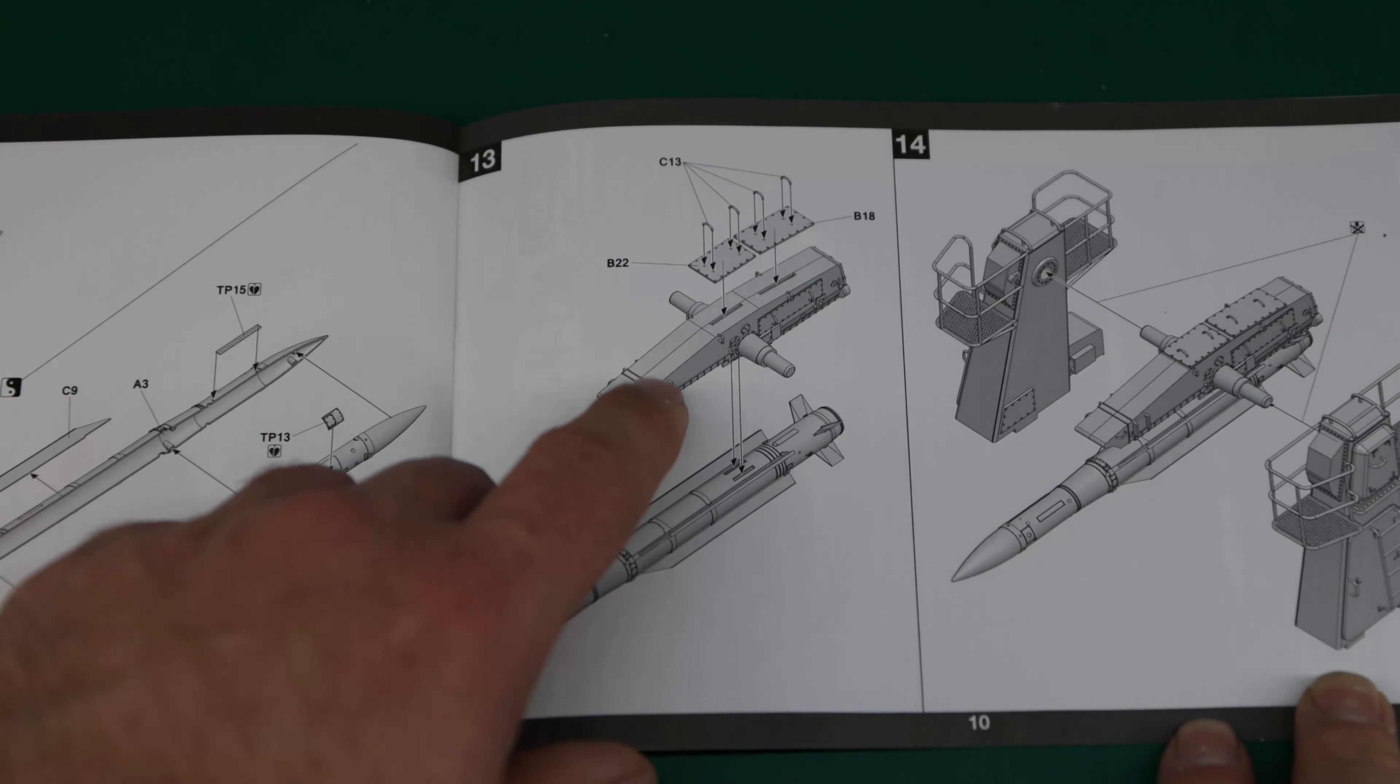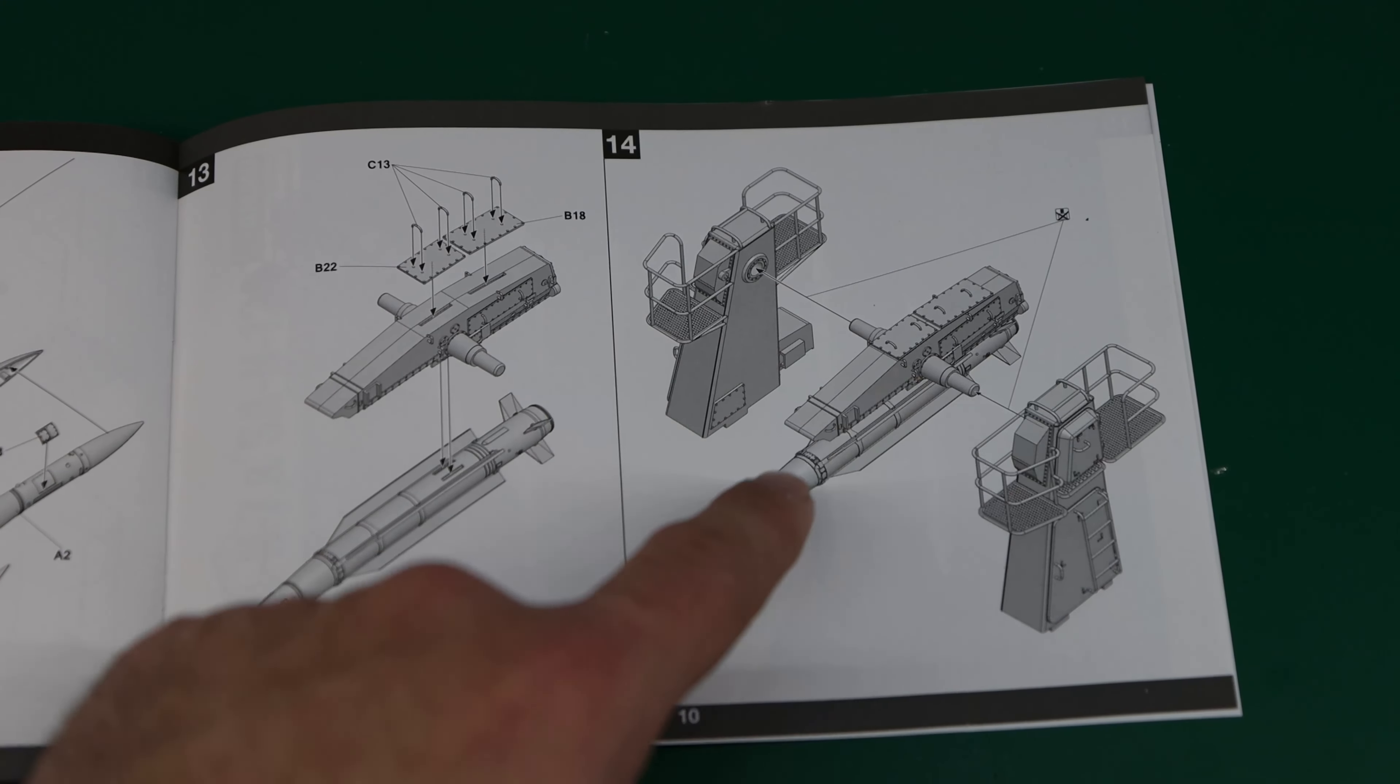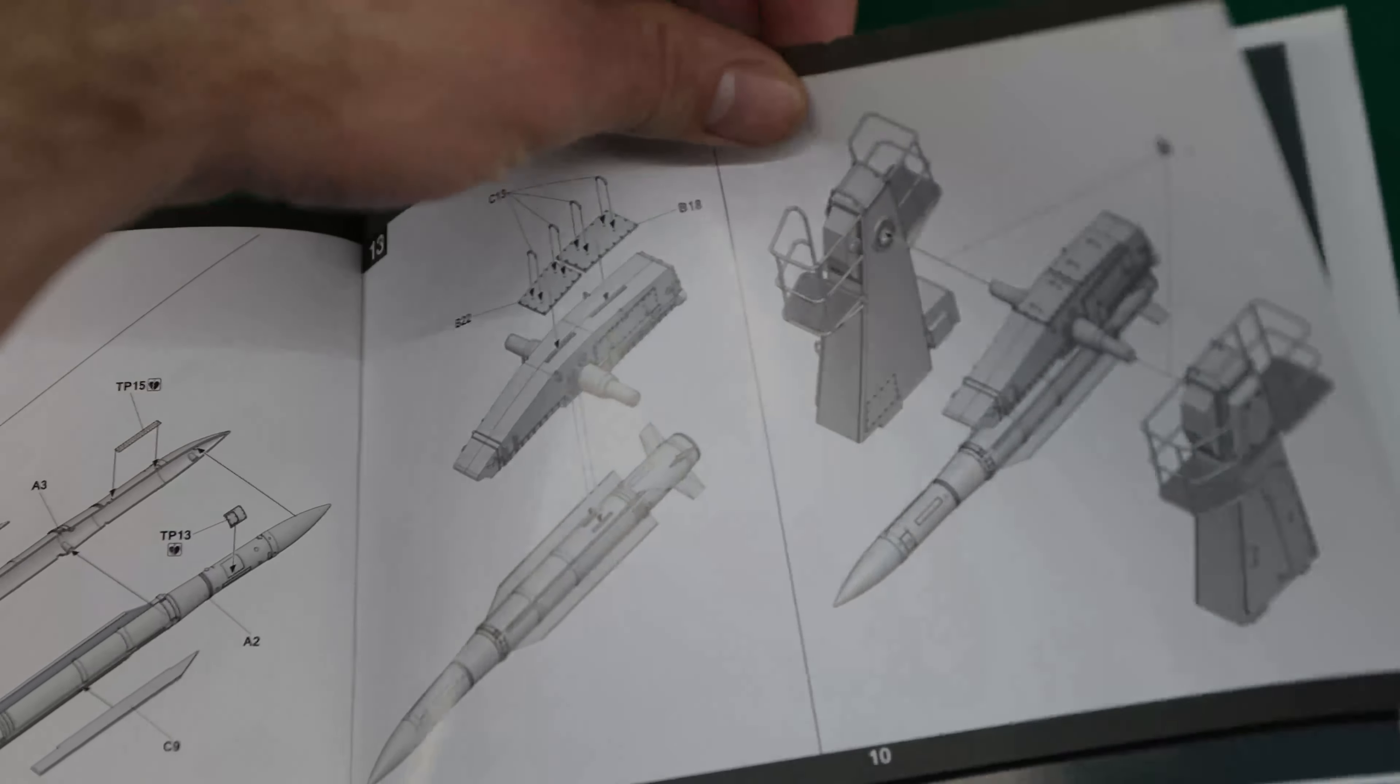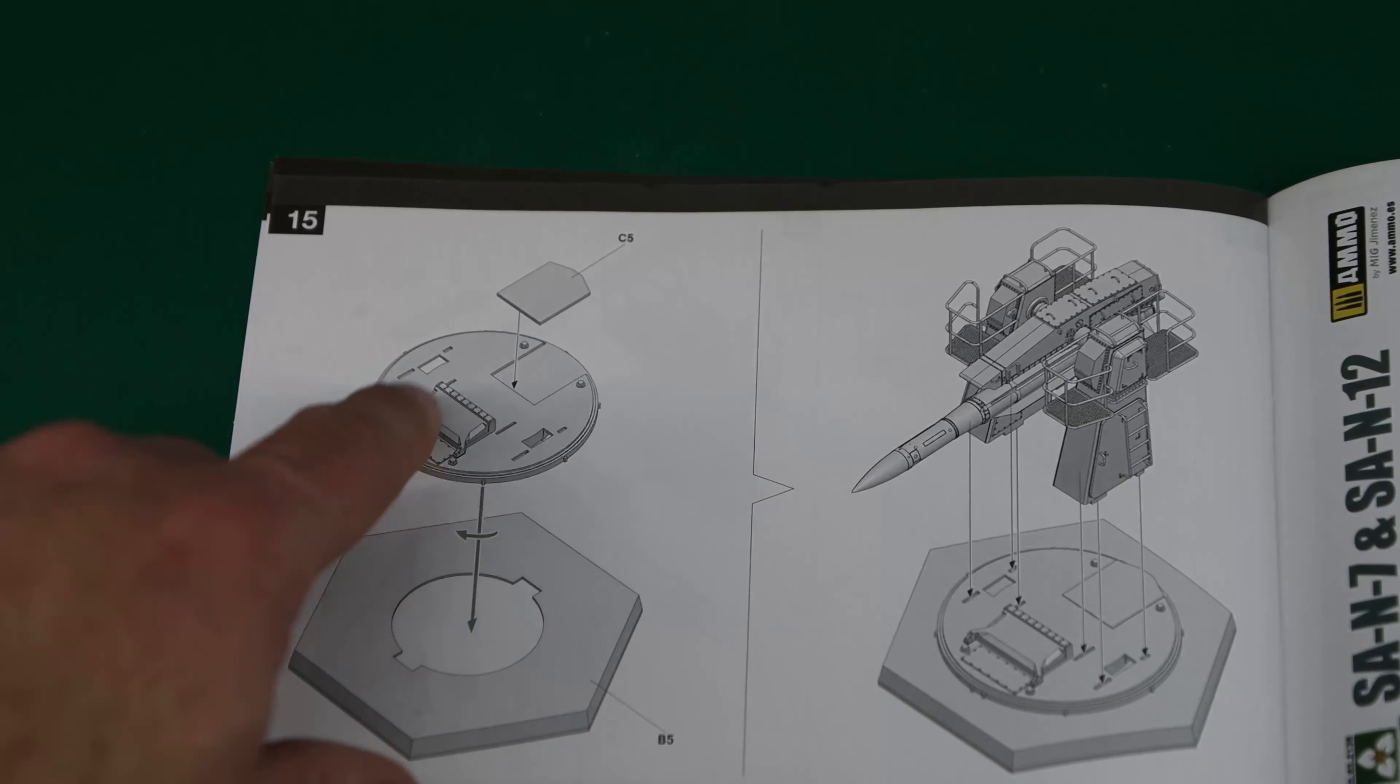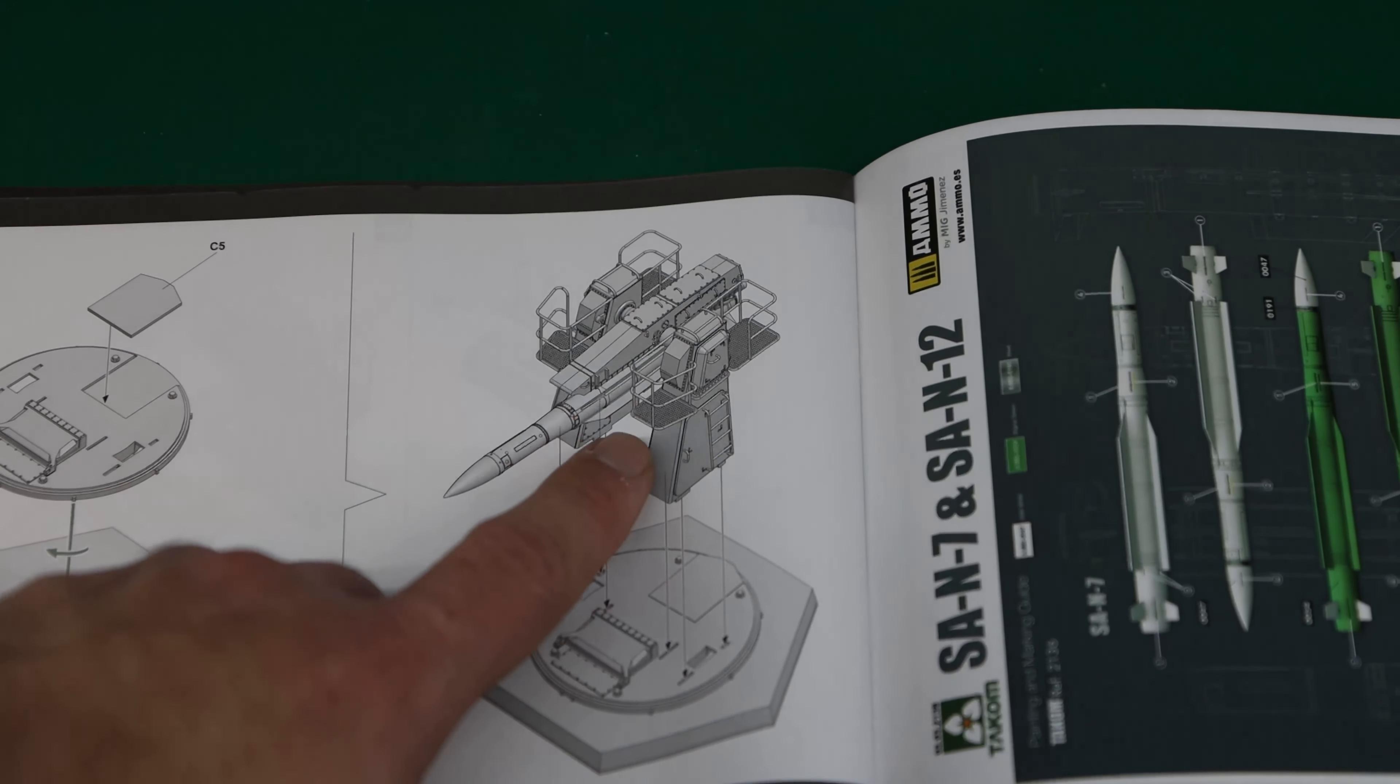Step 13, we fit a few more final details to the missile holder before we attach the missile to that. And then in step 14 we put those sandwiched all together with no glue so that it can actually pivot. And finally in step 15 we build up the base. We put the swivel plate onto the base with a detail piece before we finally fit the missile to that.